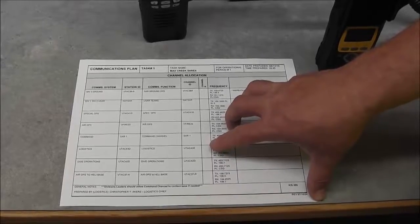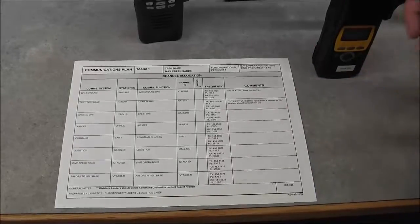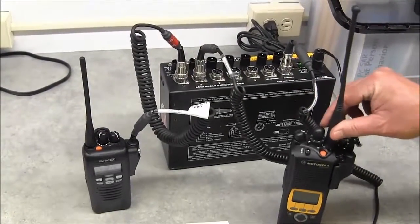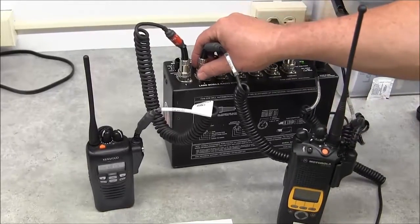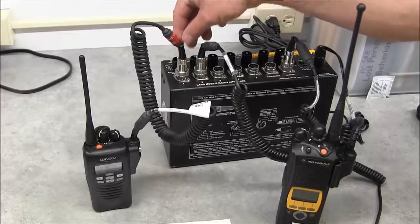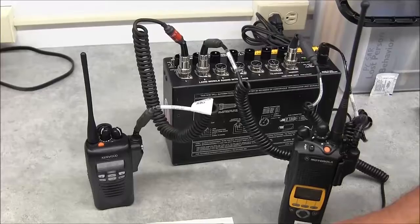We've taken the ICRI gateway and put an 800 megahertz radio on position two and the UHF radio on position one, and gatewayed those two together so that all the logistics resources are working together.